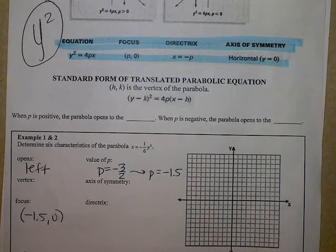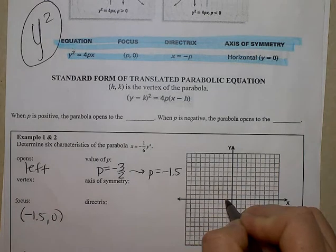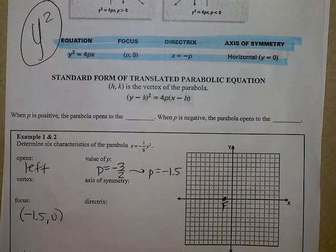So I come over and I find negative 1 and a half and 0. I make a dot, and I'm going to write an f next to it, representing the focus point. As a reminder, focus is like the food that the Pac-Man eats. The Pac-Man always eats the food.